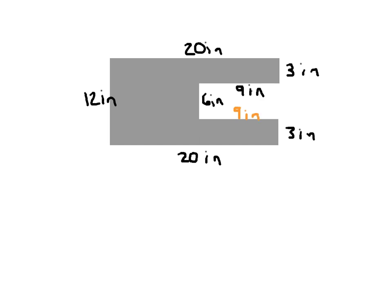I have another complex figure here. First, I'm going to label any unlabeled sides. This side is not labeled, but from the 9 on the opposite side I can say this is also 9. With this complex figure I actually have to draw two dividing lines — both a horizontal and a vertical dividing line — dividing it into three pieces whose areas I need to figure out.